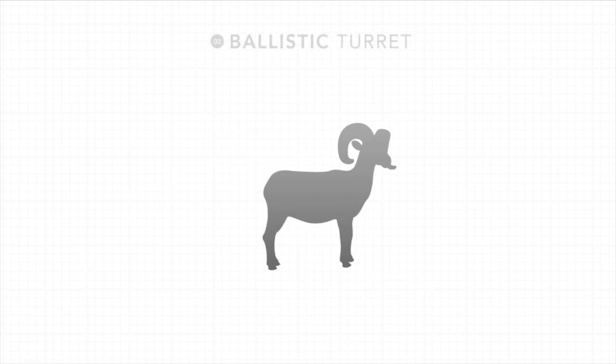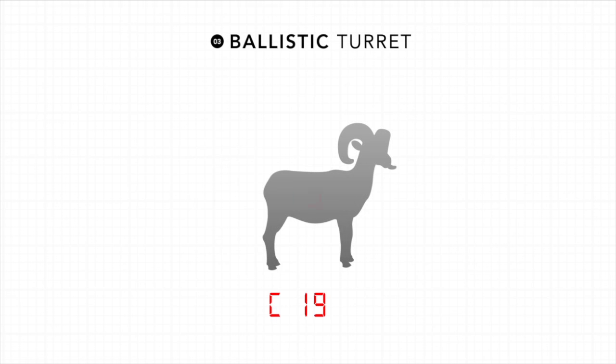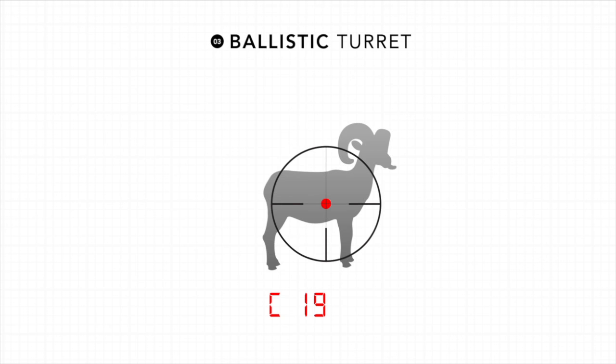The last and most accurate output is the ballistic turret option. This provides a distance and then a click value. The shooter takes this click value and adjusts his or her ballistic turret accordingly so they can hold directly on their target.